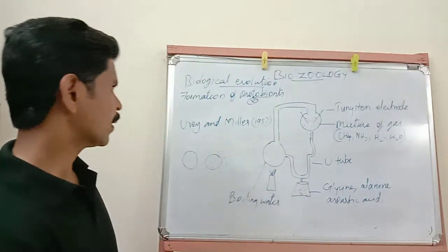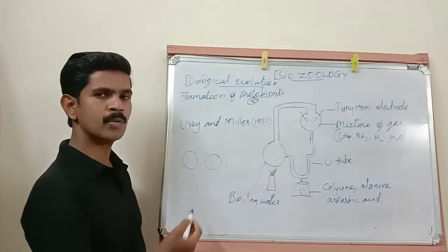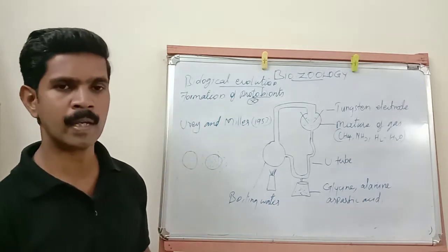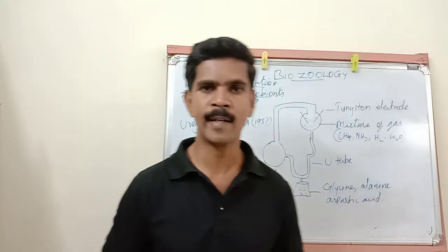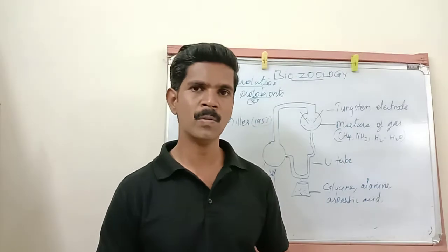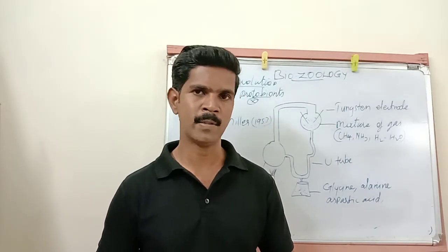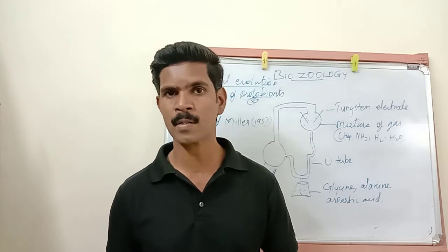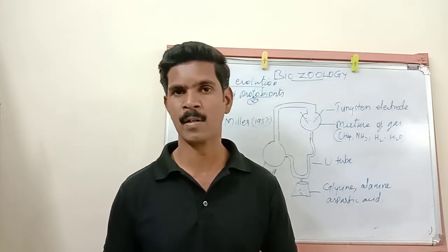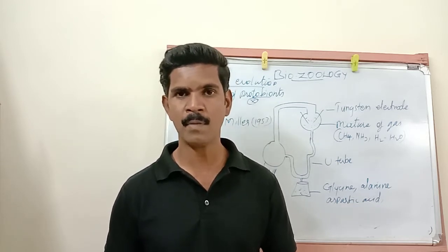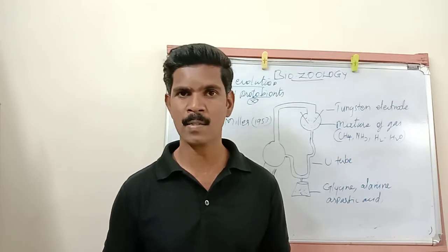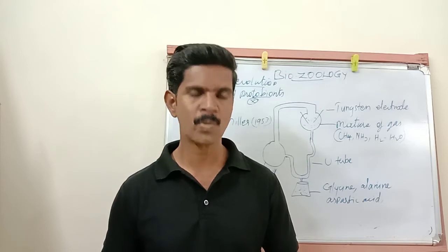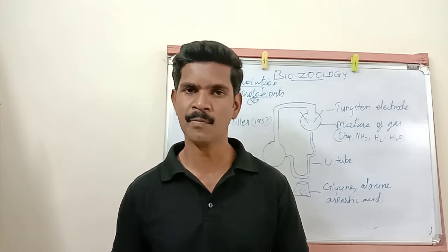Listen very carefully. In the year 1953, two scientists — Urey and Miller — conducted experiments together. According to these two scientists' experiments, some organic substances led to the appearance of living products, meaning some living organisms arose from organic substances.